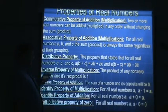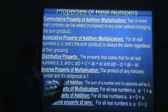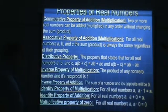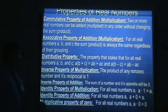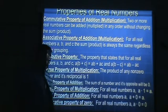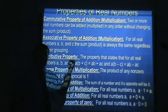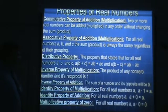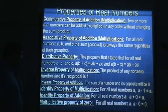The inverse property of multiplication says that when you multiply a number by its reciprocal, the result will be 1. The inverse property of addition is when the sum of a number and its opposite will be 0. So the inverse property of addition results in a zero sum, and the inverse property of multiplication results in a product of 1.